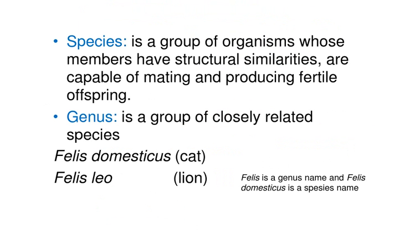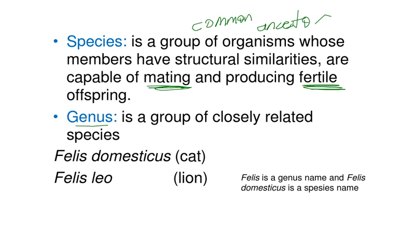For example, Canis lupus is the scientific name for wolf, and Canis familiaris is the scientific name for dog — both share the genus Canis. Our scientific name is Homo sapiens. A species is a group of organisms with structural similarities that come from a common ancestor and are capable of mating to produce fertile offspring. A genus is a group of closely related species — for example, Felis domesticus is the cat and Felis leo is the lion, both in the genus Felis.